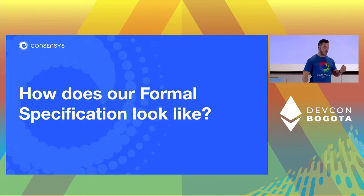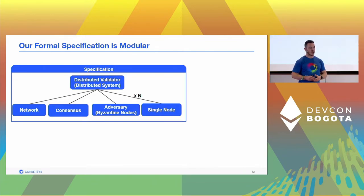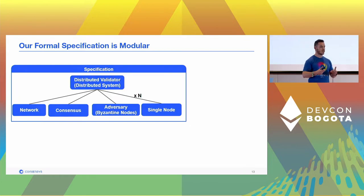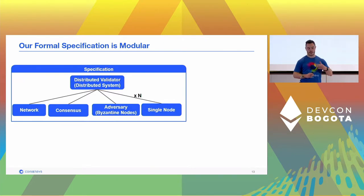Now let's look at how the specification actually looks. The specification is modular — it's not a single piece. We need to specify how the single node, the DVC middleware layer, behaves. We also need to specify how the Byzantine node behaves — specifically what it cannot do: it cannot forge signatures and it cannot change the state of another node. We also have a specification for the consensus protocol, since the DVT protocol is agnostic of the consensus protocol used. We specify the network behavior — for example, which sequencing of messages you might have. All of this is linked together in the distributed validator specification.